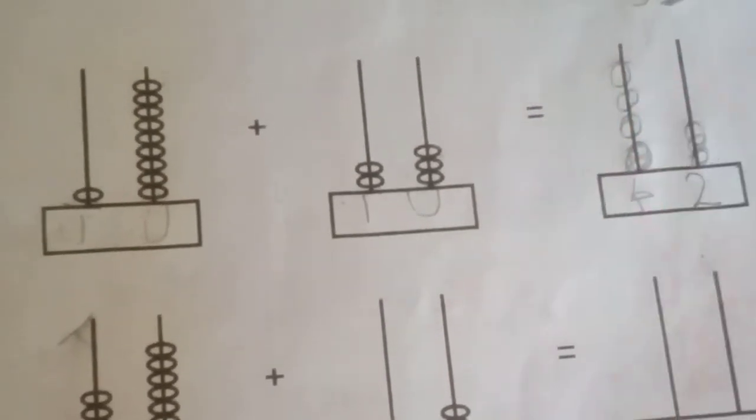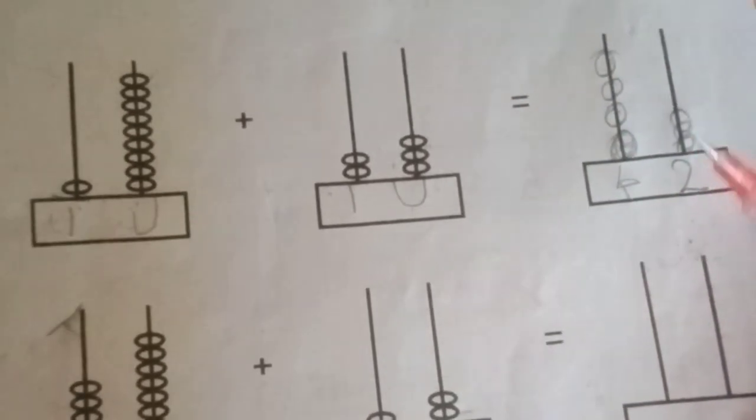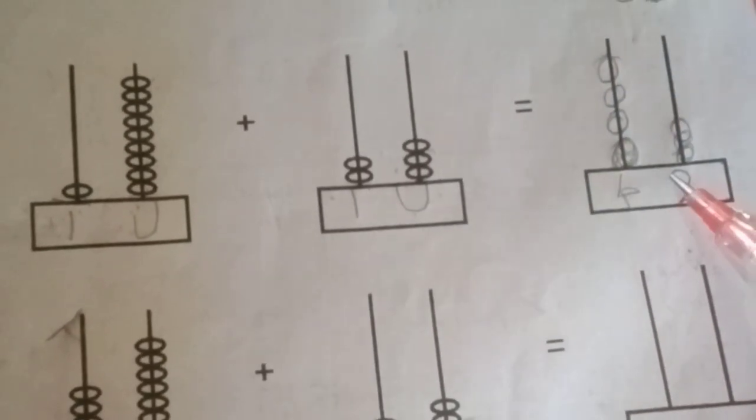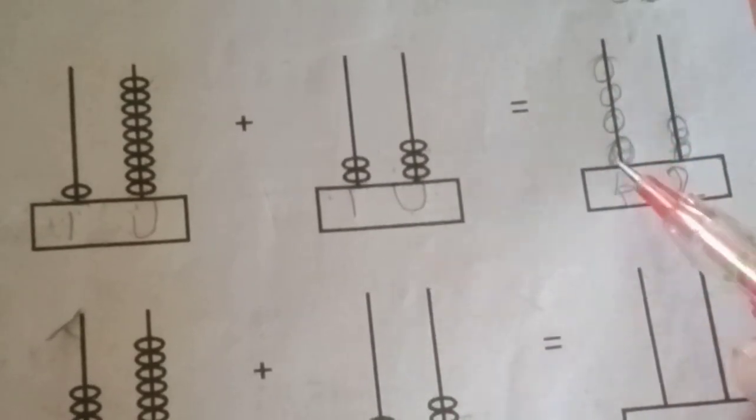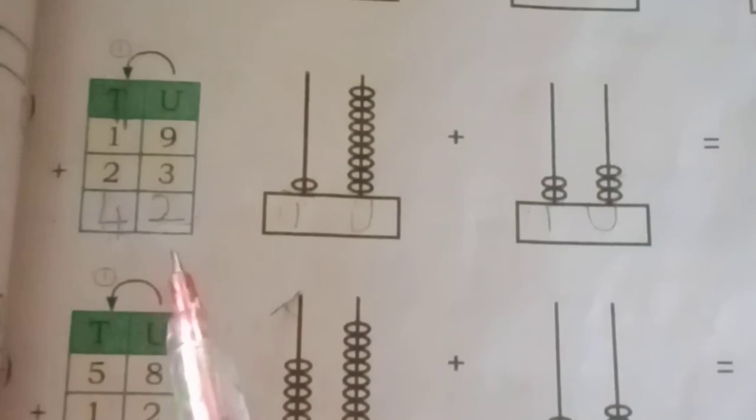Now we have to add all these 2. Here 2. And here 1, 2, 3, 4. So total answer is 42. Here also 42.